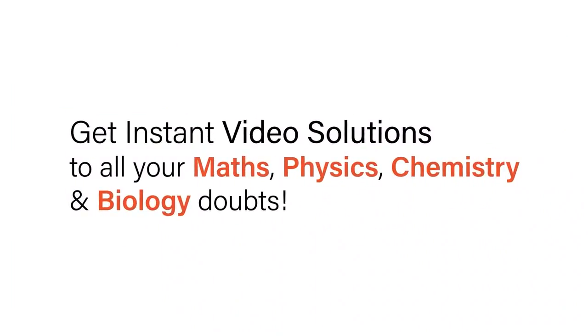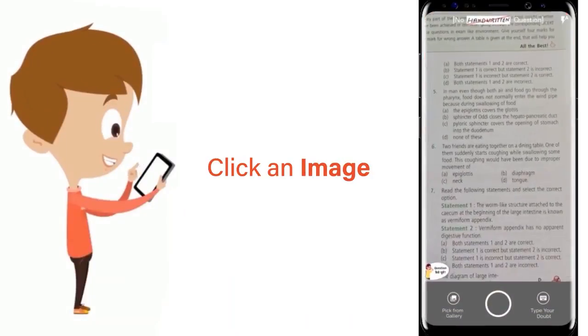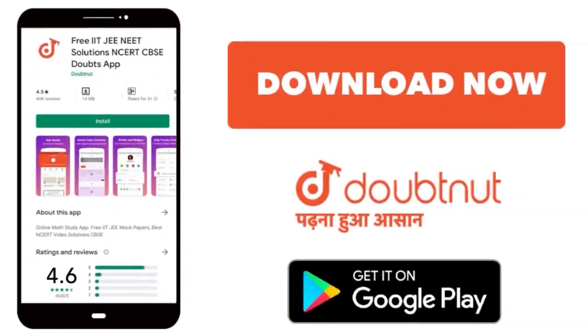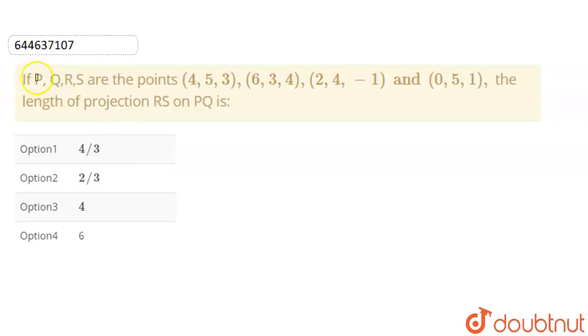With Doubtnut, get instant video solutions to all your math, physics, chemistry, and biology doubts. Just click the image of the question, crop it, and get an instant video solution. Download Doubtnut app today. Today our question is: if P, Q, R, S are the points (4, 5, 3), (6, 3, 4), (2, 4, -1), and (0, 5, 1), find the length of projection RS on PQ.